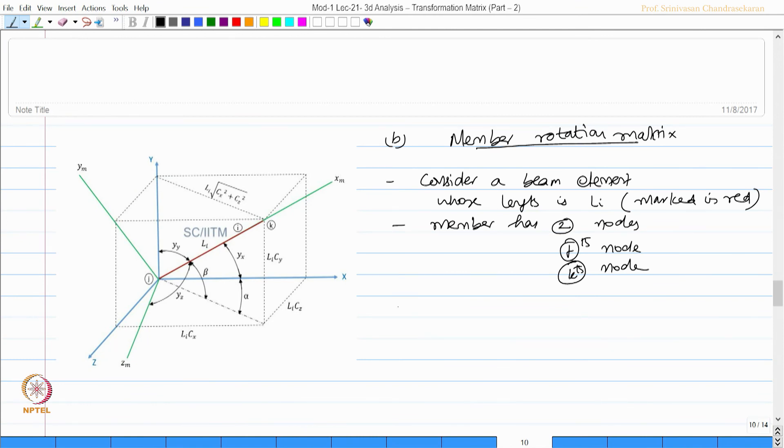Now, let us say the member is oriented along its local axis system, which we all know is xm, ym, and zm. The member is aligned along x, y is 90 degrees anticlockwise, z is further 90 degrees anticlockwise. Xm, ym, zm is a standard local axis system along which the member is aligned, which is a very common principle we also follow in two-dimensional analysis. We borrow the same logic back again here.